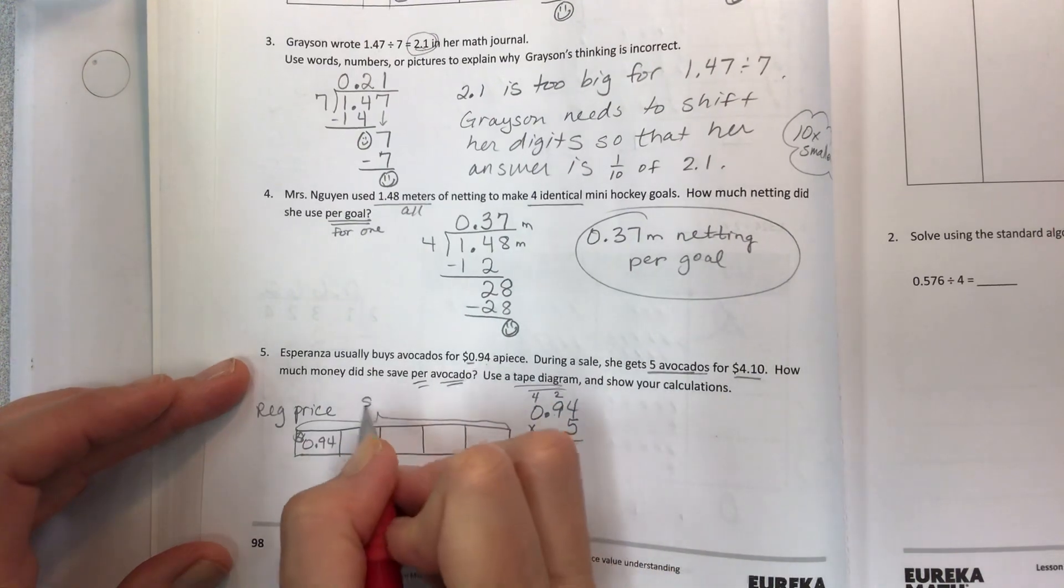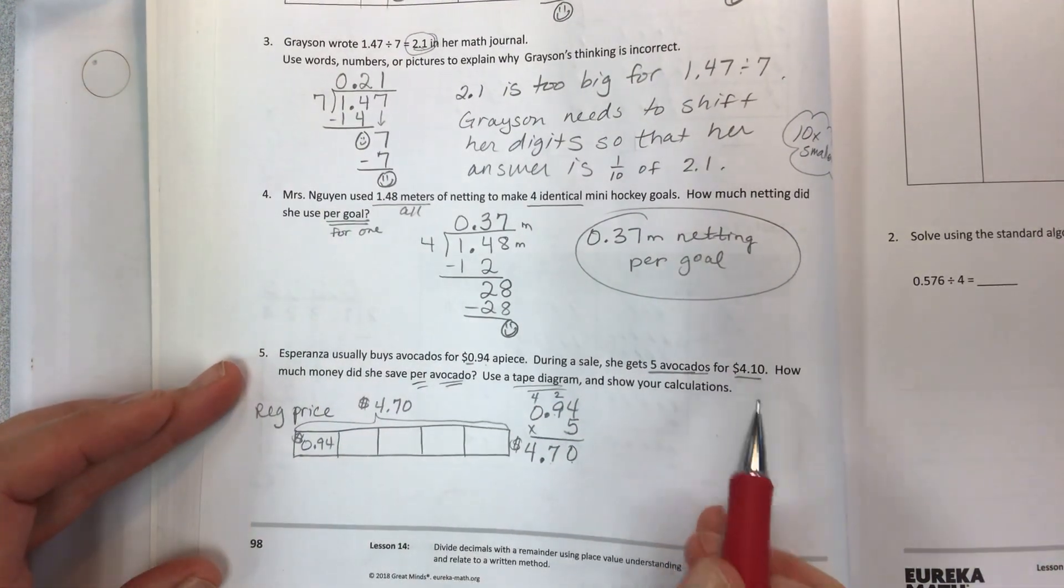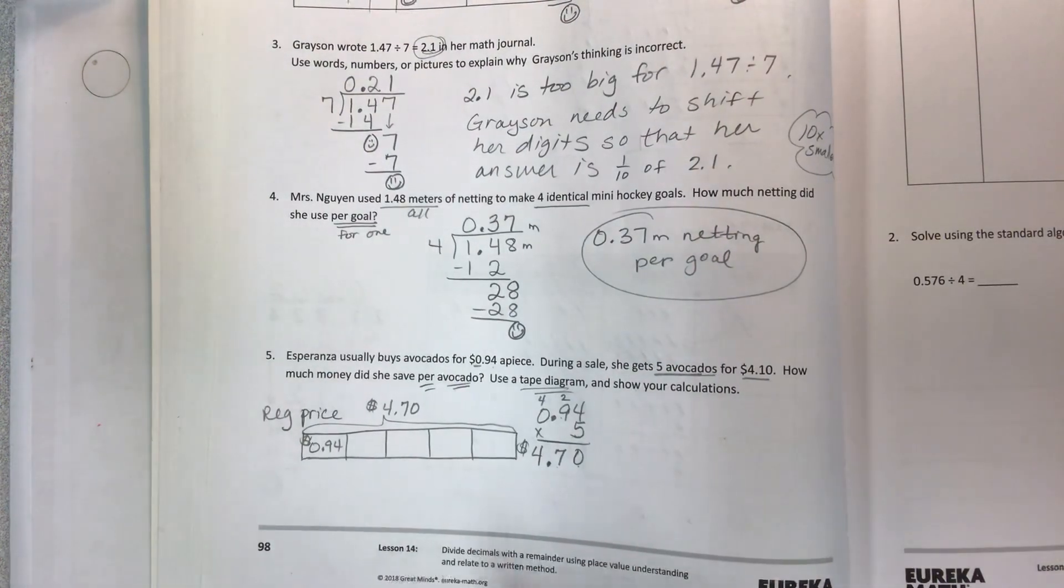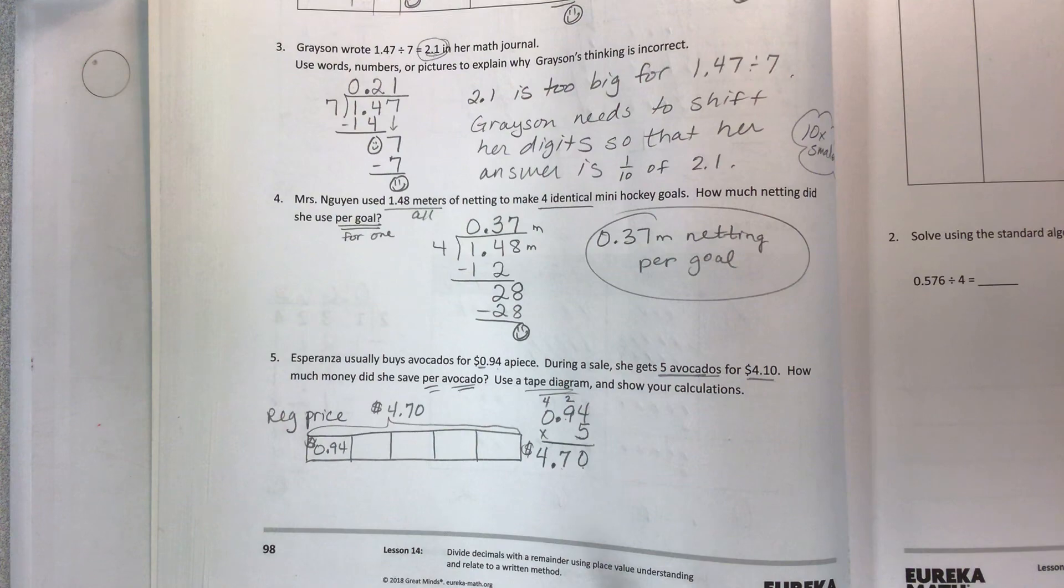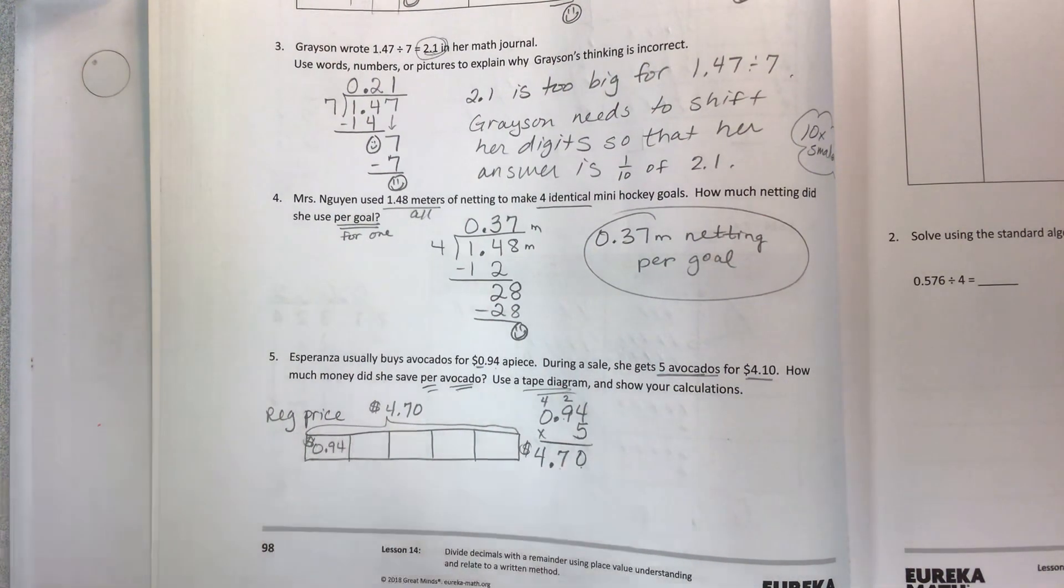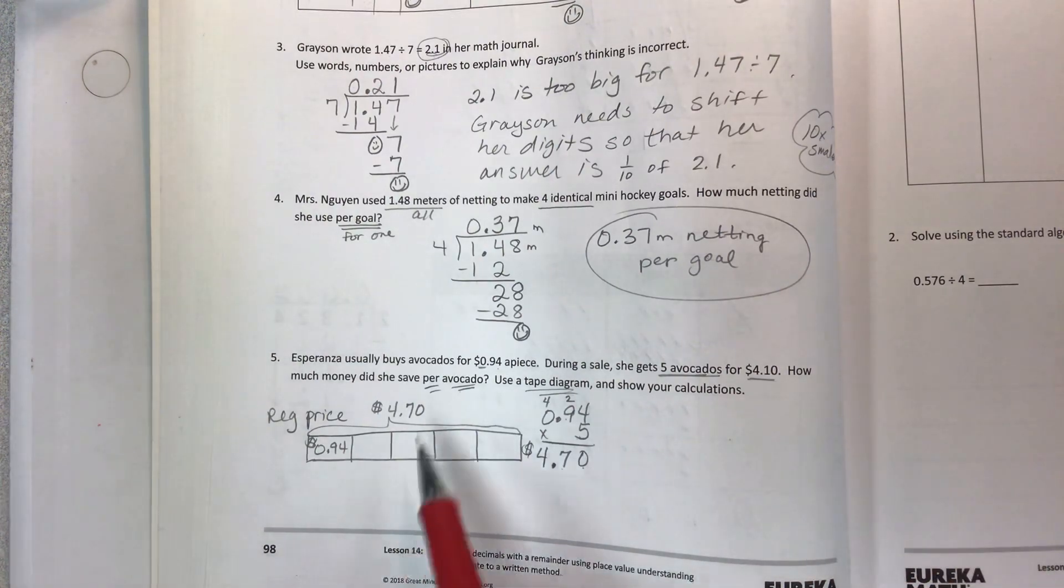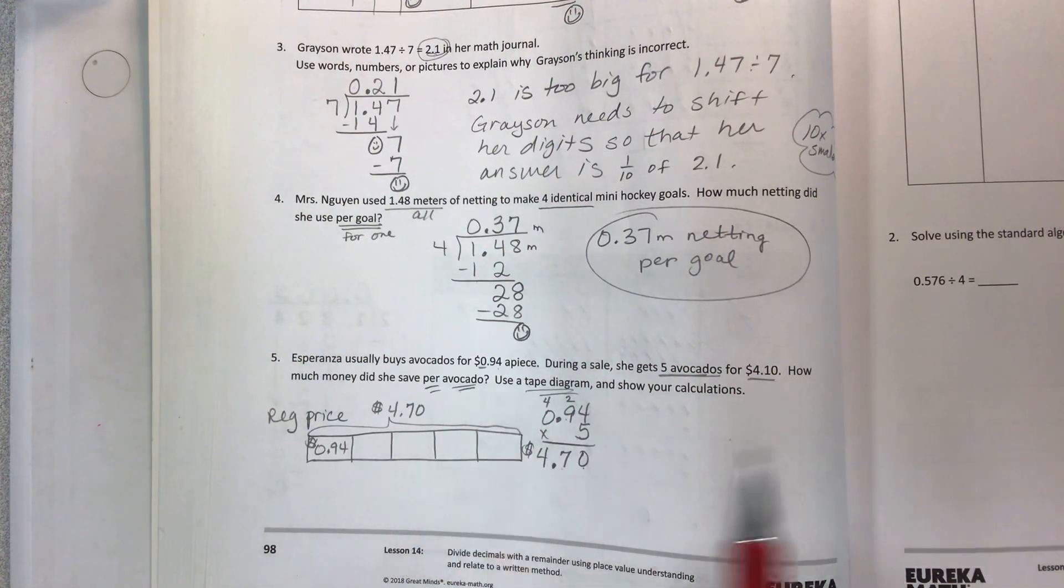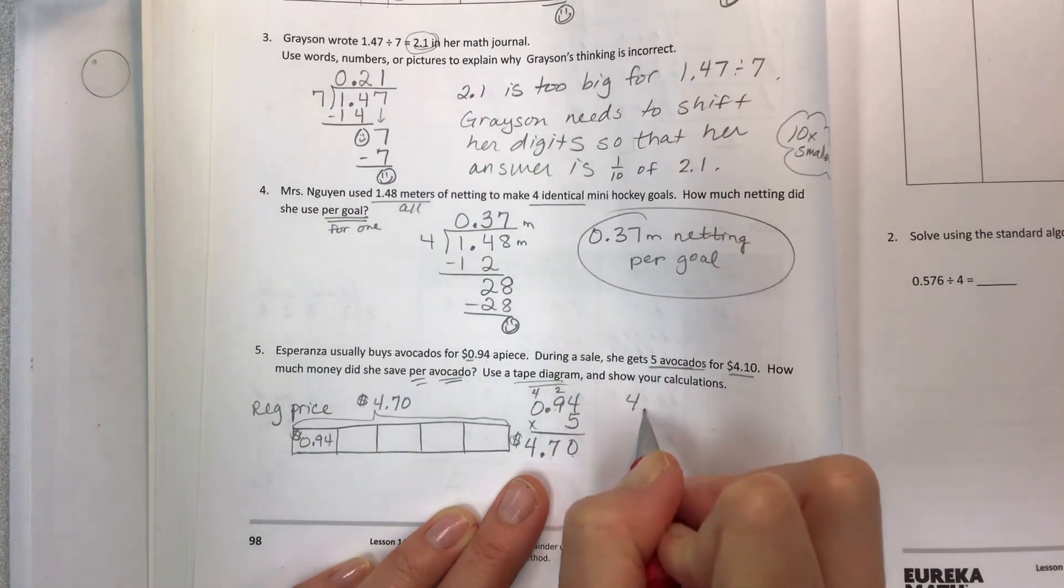For the regular price of her avocados, and that will come in handy when we're going to compare now with the old price, the regular price. I want to know how much she's saving, but I have to know per avocado, not for the whole amount. So let's take our savings away from the usual cost.